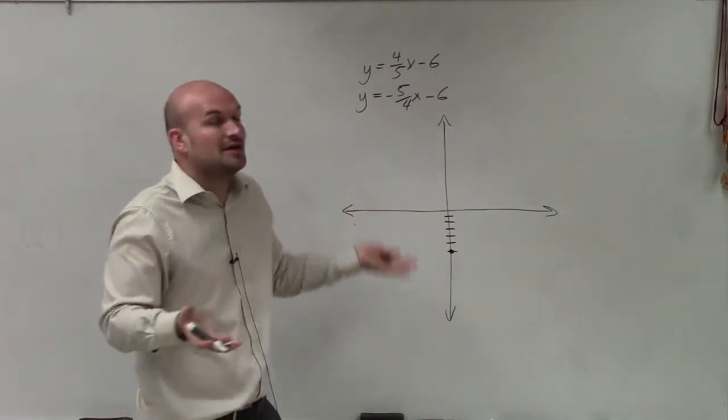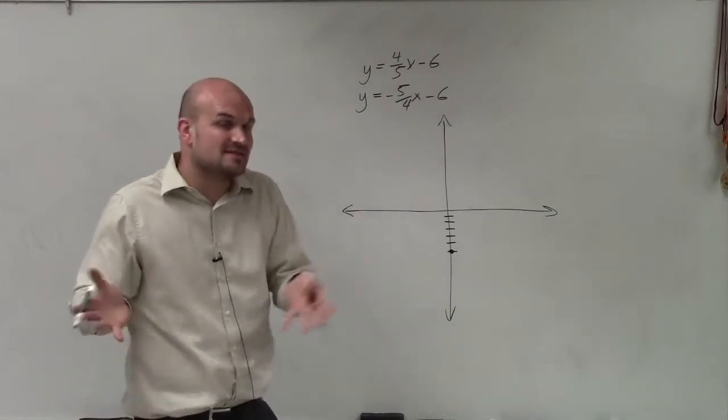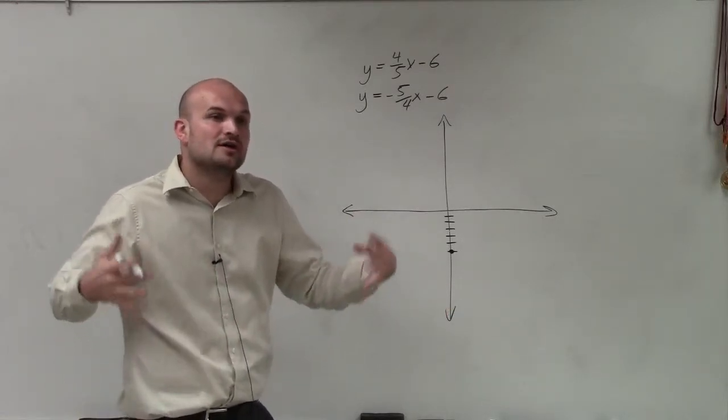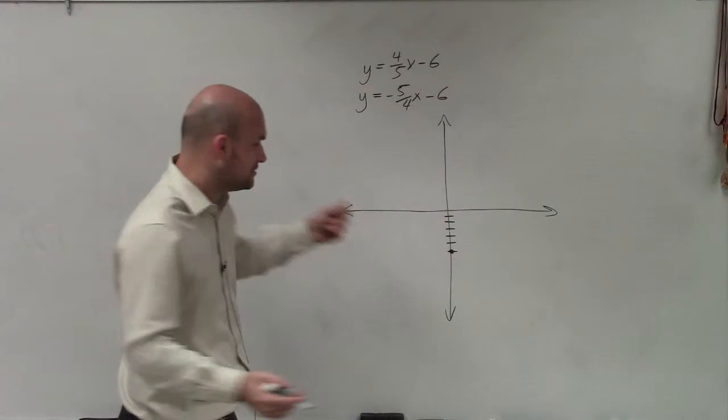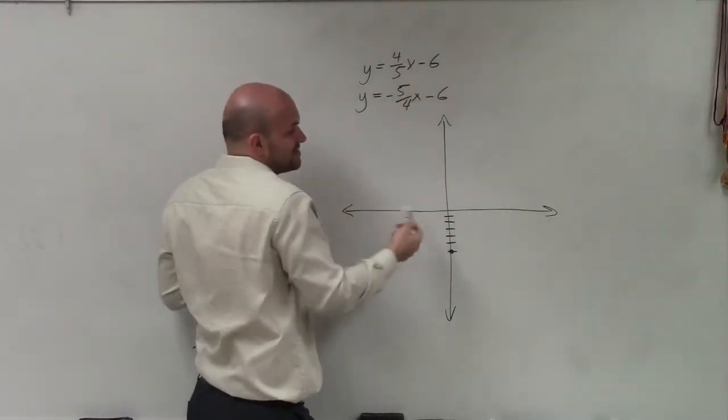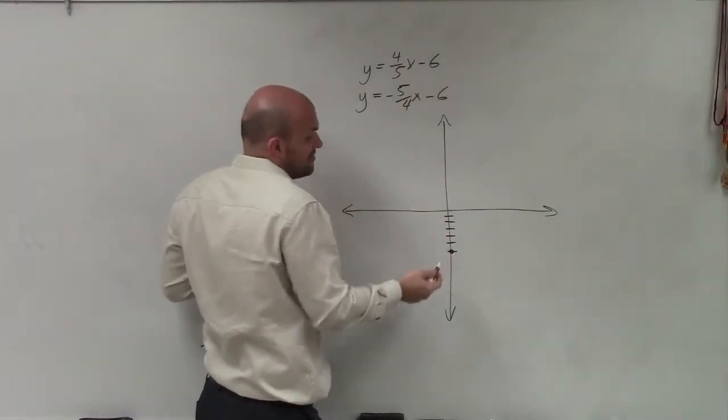Now, we already know where the solution is, but let's just double-check to make sure there are no other solutions or that these are not dependent solutions. We know they're not going to be because the slopes aren't the same, but I just want to graph them.